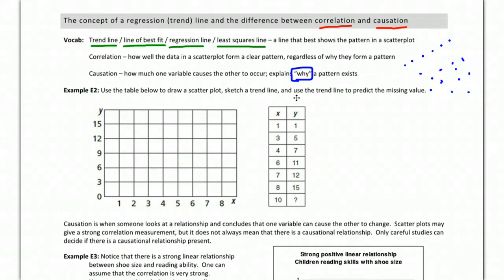So looking at this example, we want to draw a scatterplot, we're going to sketch a trend line, which is going to be a little different than using a formula which we'll do later, and then we're going to use it to predict our missing value. So let's go ahead. We got (1,1), (3,5), we're just plotting points here, (4,7), (6,11), (7,12), (8,15), and then we don't know (10,?) in this mystery one, so we're going to deal with that in a second.